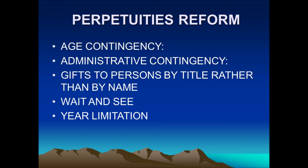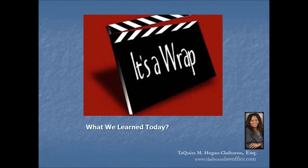There has actually been some perpetuities reform. While the common law Rule Against Perpetuities continues to apply in many states, criticism of the rule has led to various reforms. The most common include: age contingency, administrative contingency, gifts to persons by title rather than by name, wait-and-see, and year limitation. The wait-and-see doctrine holds that the validity of a contingent interest is determined not on the basis of facts as they exist when the interest was created, but on facts as they actually occur. If a non-vested interest actually vests or fails to vest in a timely manner, the interest is good under the rule.